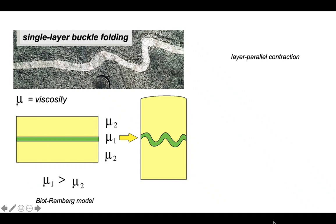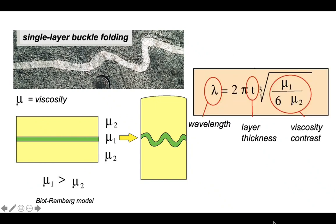These experimenters were able to change the layer thickness and the viscosity and empirically derive this relationship that the wavelength of the fold relates to layer thickness and the viscosity contrast. It's rather ugly expression, but the take home is that layer thickness and viscosity contrast control the behavior and the development of the wavelength.